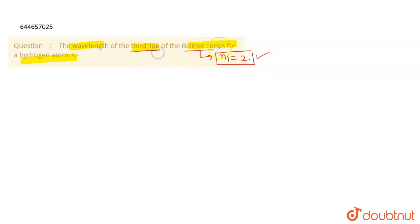So the third line means now if n1 is 2, the n2 values can be 3, 4, 5, 6 and so on.